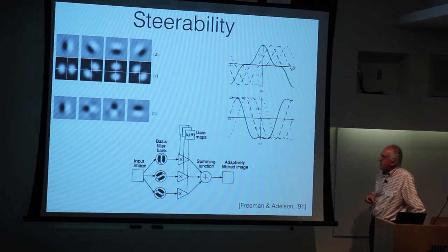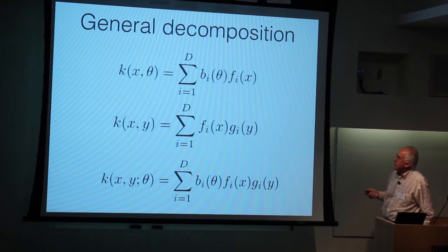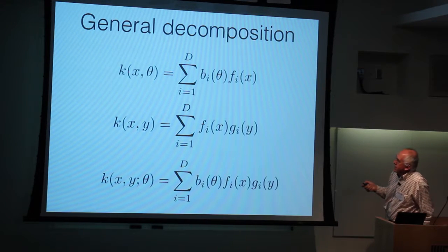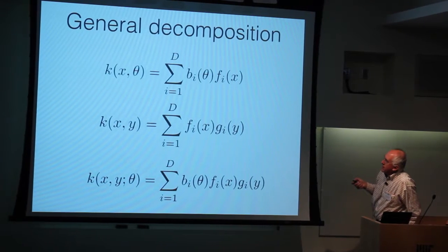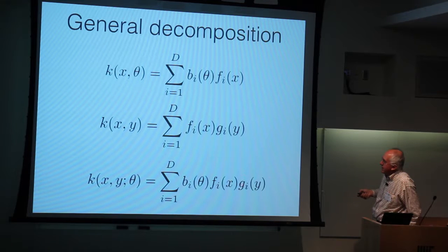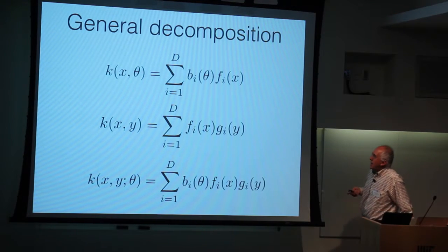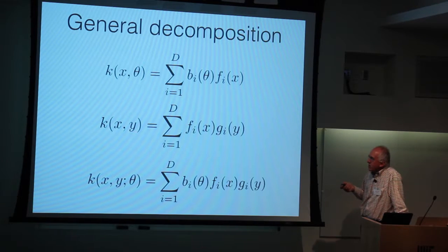This is called steerability, but very few functions have this property. So this was a little bit of a question that was left open. In general, what you would like to do is your kernels are a function of x and orientation, or x and y and orientation. So the idea would be, let's find ways of decomposing your kernels into separable forms. It could be separable in space, or it could be separable in space and orientation, or it could be separable in space, orientation, and space again. And then you could have scale. The question is whether you can take these kernels that are a function of lots of different parameters and write them out as sums of separable things that are very inexpensive to compute.